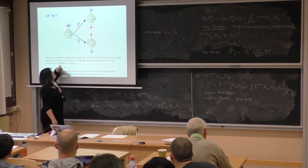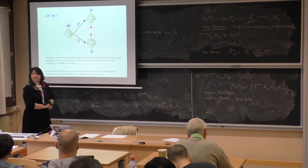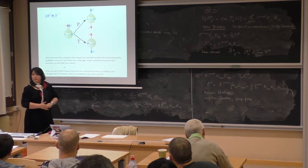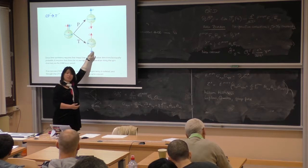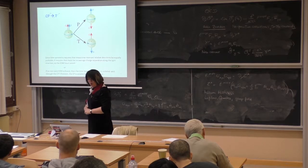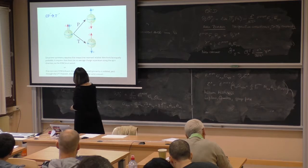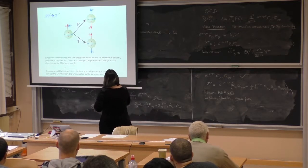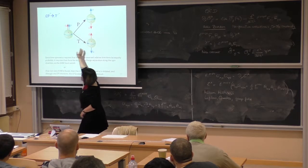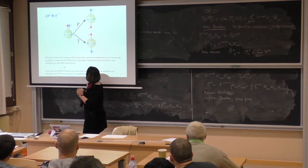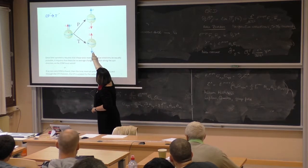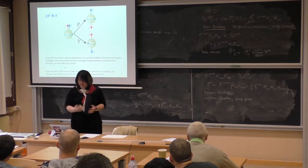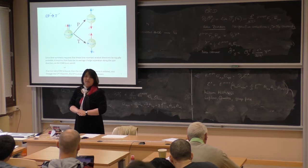Assuming coexistence of spin and electric dipole moment: under time reversal, the EDM remains in the same direction because it's a polar vector, but the spin reverses direction because it's an axial vector. The same thing happens under parity reversal. If we require time symmetry, the relative directions must be equally populated, leaving no net EDM. So if time reversal symmetry is respected, no EDM is allowed.